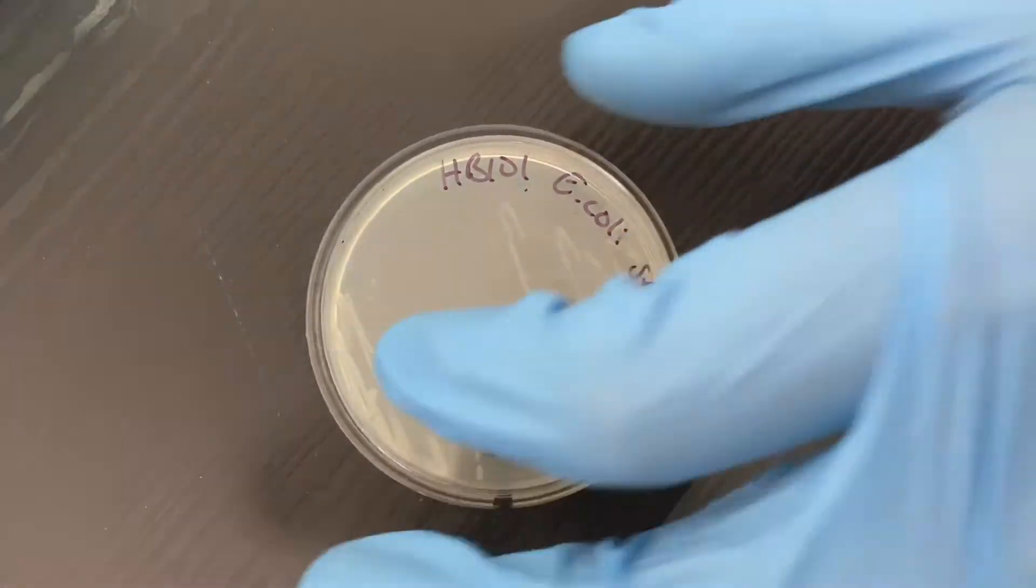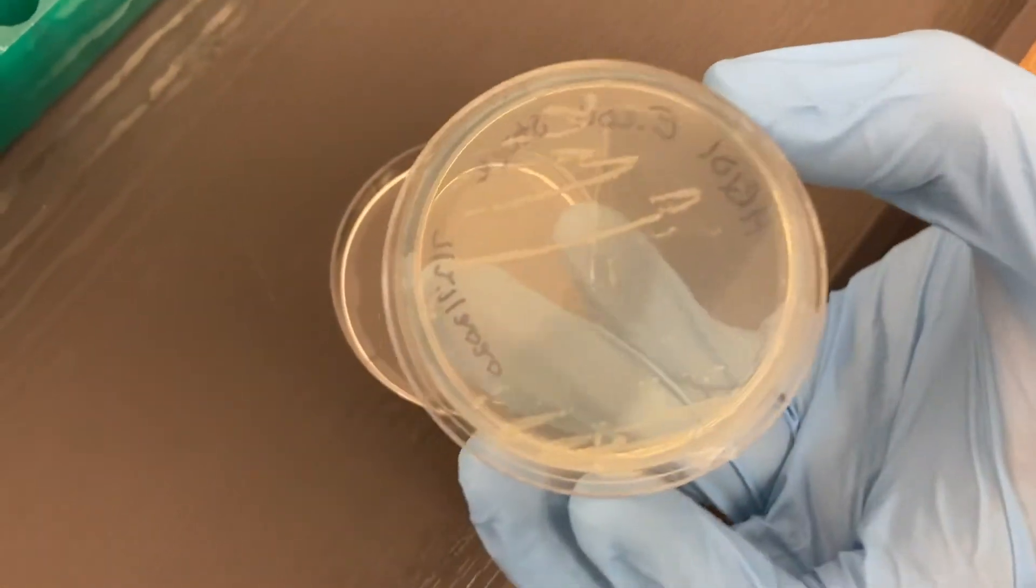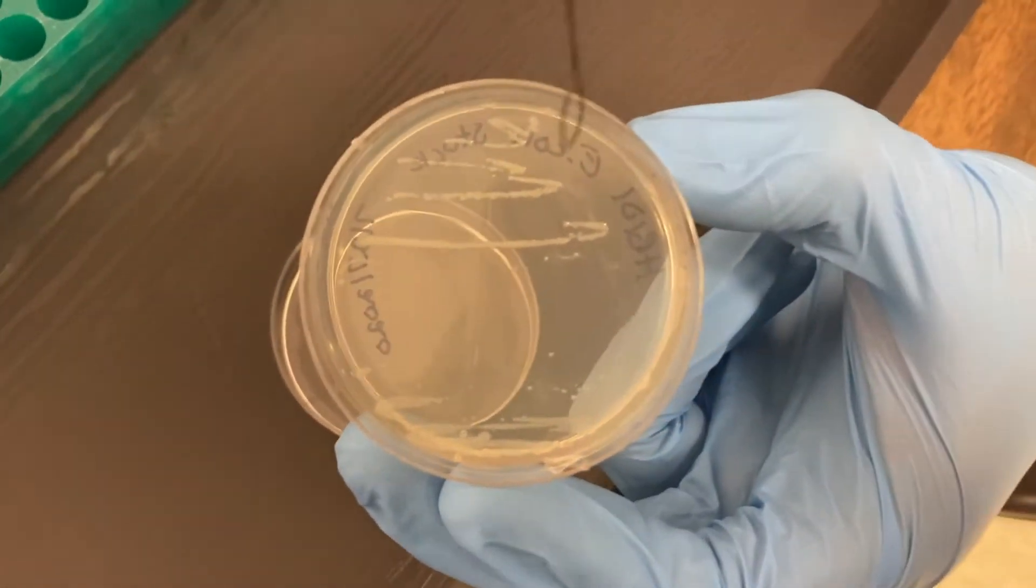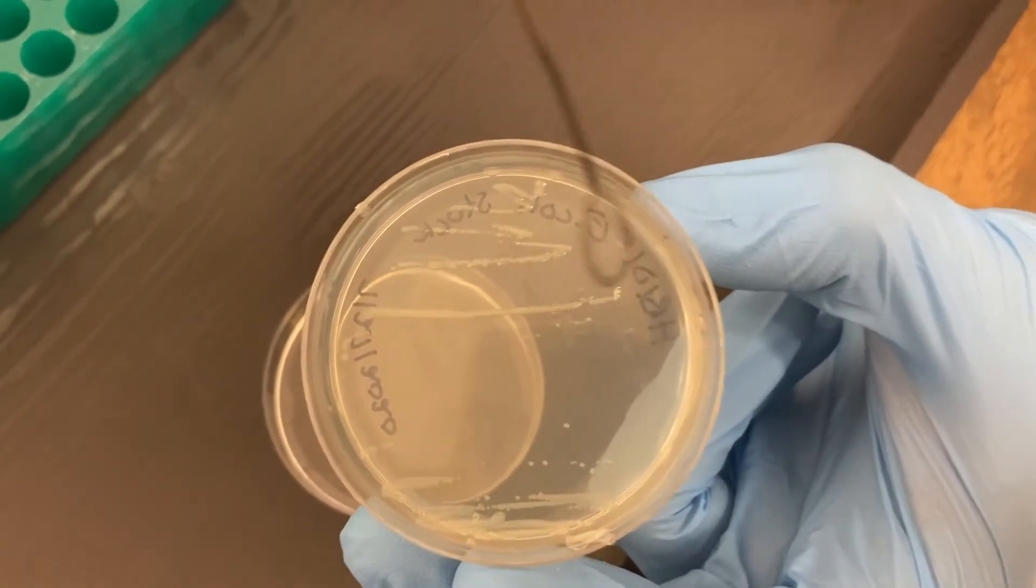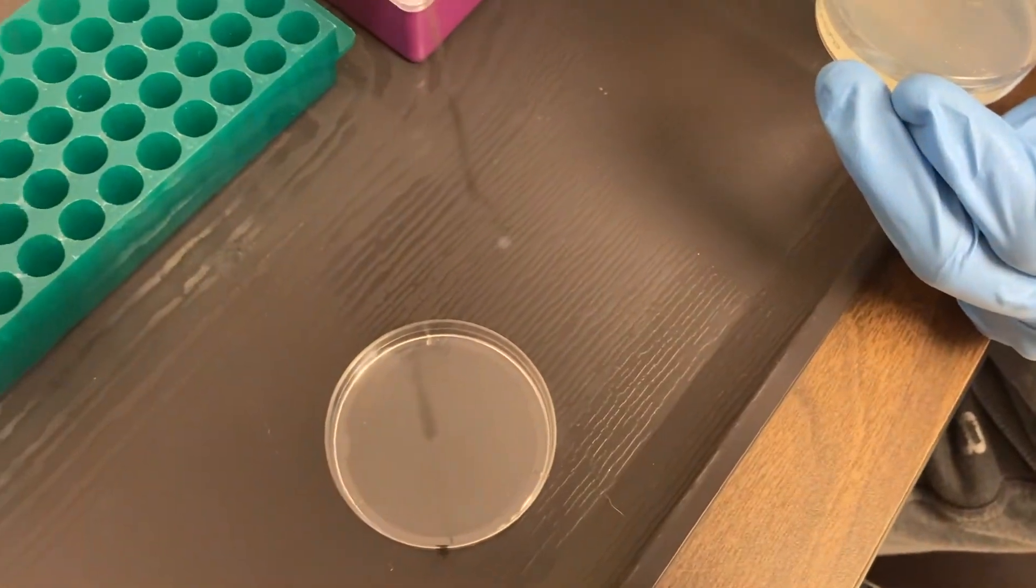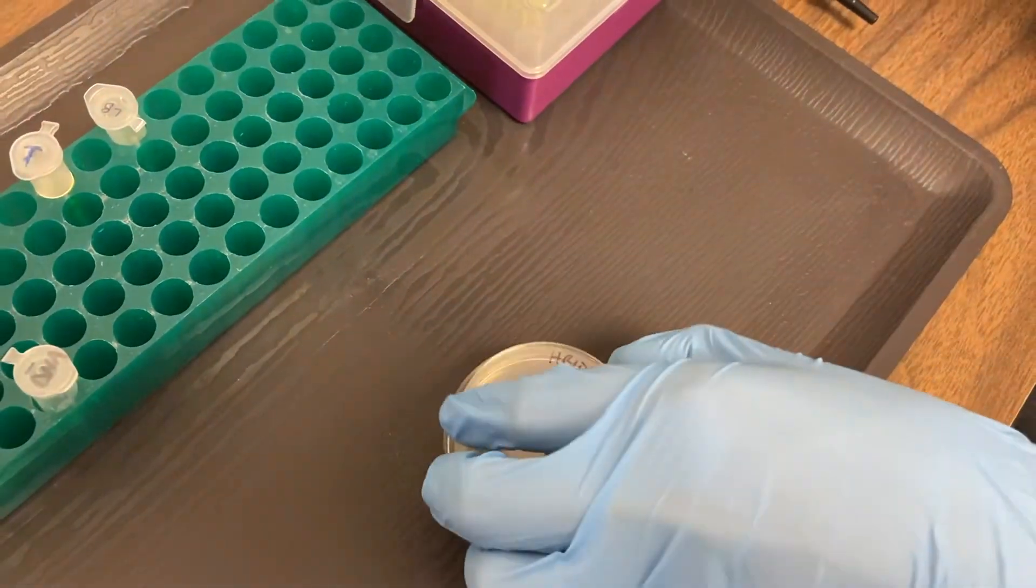Start with our stock of E. coli bacteria. This is what we're trying to get our plasmid into so that we can make the green fluorescent protein. We use this inoculating loop to swipe across the top of the agar and get a little bit of bacteria off there.